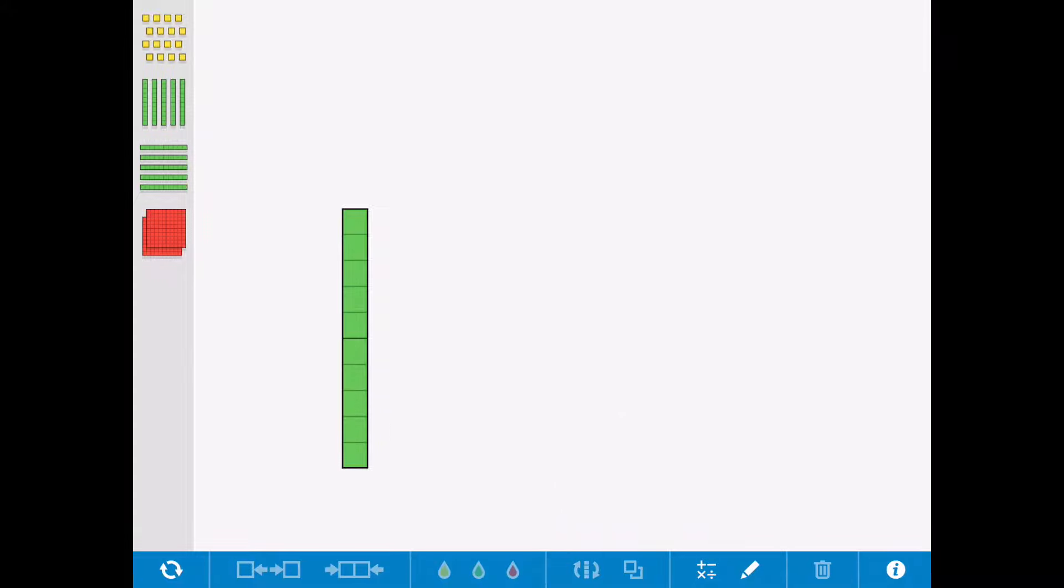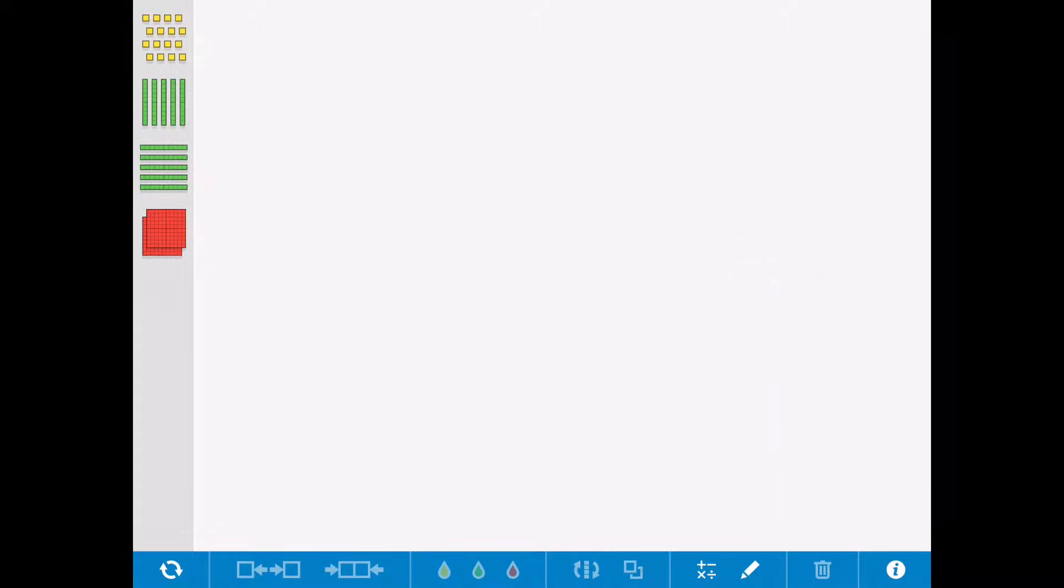When we do that with the children, we also introduce them to place value charts. This is a place value chart with ones and tens. Now if I was to make the number 36,